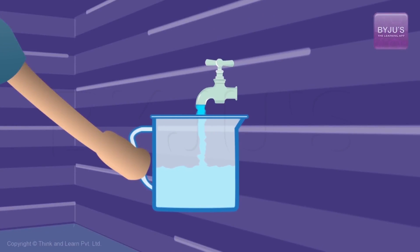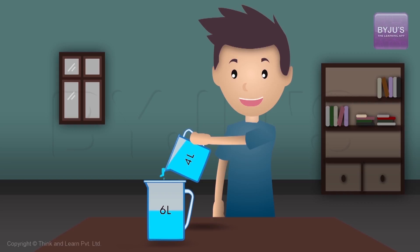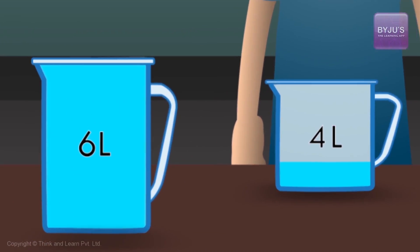Now fill the 4 liter jar and transfer water into 6 liter jar which now only has 3 liters. The 4 liter jar will end up having 1 liter left and you have your solution.